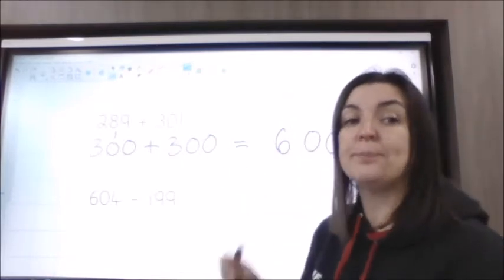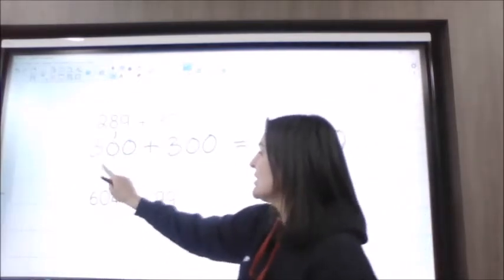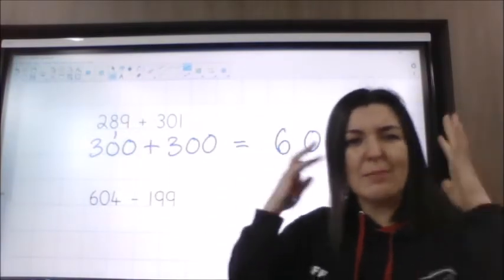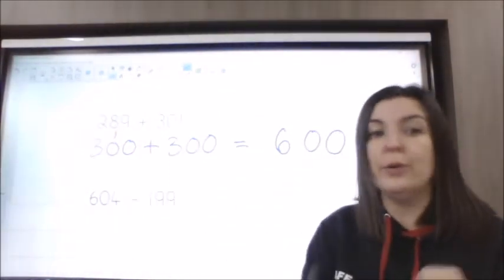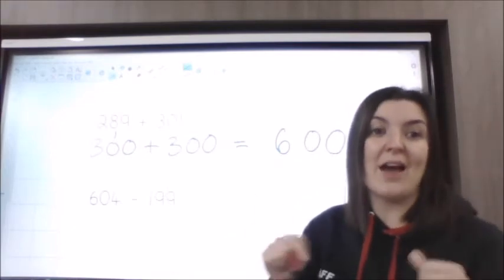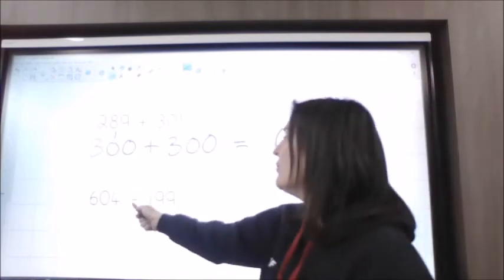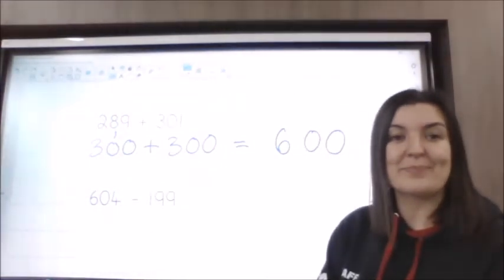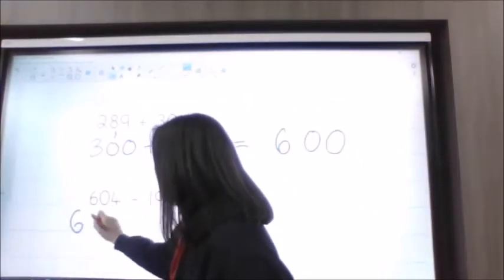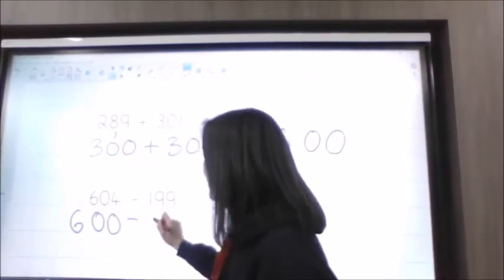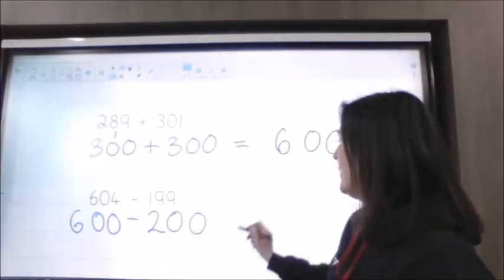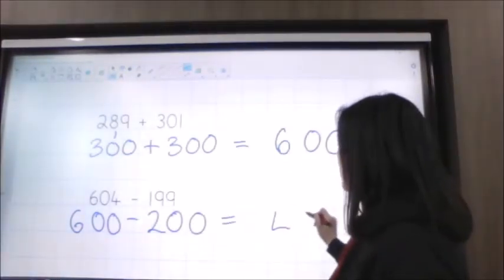Pause the video and have a go at this one: 604 take away 199. Think about which numbers they are close to that would make it easy for you to take them away. What I would have done is taken 604 to 600 and 199 to 200, and done 600 take away 200, which would be 400.